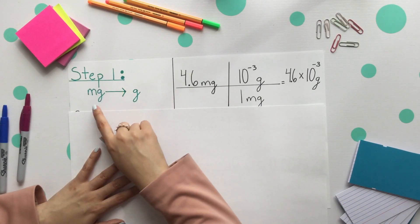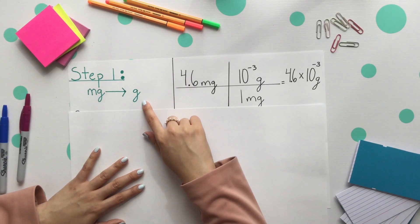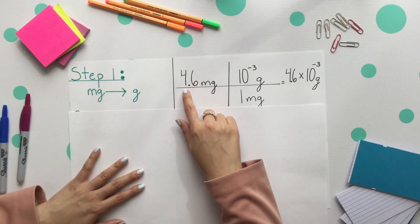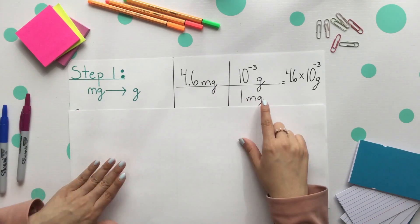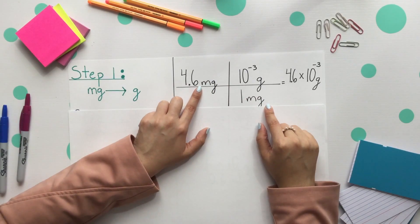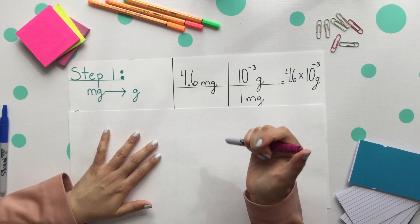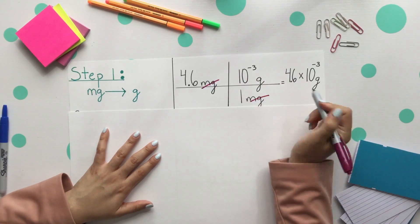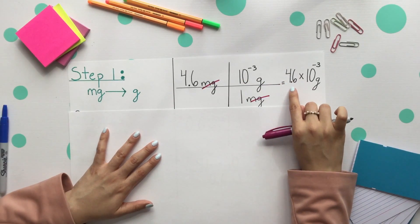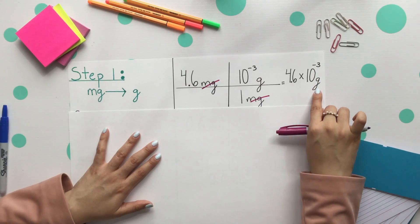Step one is taking our milligrams and converting them to grams. Our given was 4.6 milligrams, always aligning the milligrams across from one another so they can then cancel. Milligrams cancel. We now are left with 4.6 times 10 to the negative third grams.